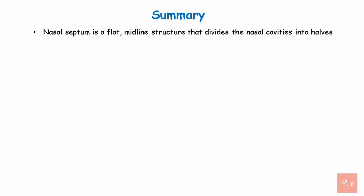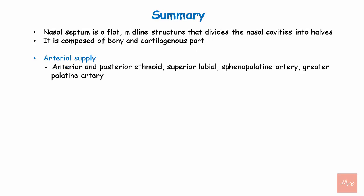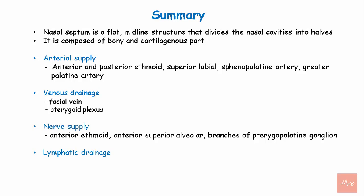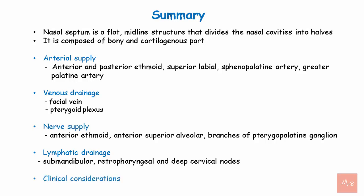To summarize: the nasal septum is a flat midline structure that divides the nasal cavity into halves. It is composed of bony and cartilaginous parts. Arterial supply is from the anterior and posterior ethmoidal arteries, superior labial artery, sphenopalatine, and greater palatine arteries. Venous drainage occurs via the facial vein and pterygoid plexus. Nerve supply is from the anterior ethmoidal nerve, anterior superior alveolar nerve, and branches of the pterygopalatine ganglion. Lymphatic drainage is to the submandibular, retropharyngeal, and deep cervical lymph nodes. Clinically, it is important in the context of epistaxis and deviated nasal septum.